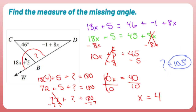You could also set up: this angle plus this angle plus the missing angle equals 180, then plug in 4 for x — two valid approaches. I went with the supplementary method. The answer is 103 degrees — which is two more than 101 Dalmatians.